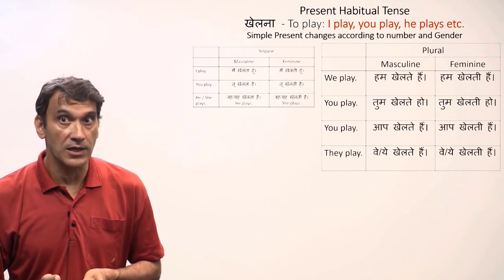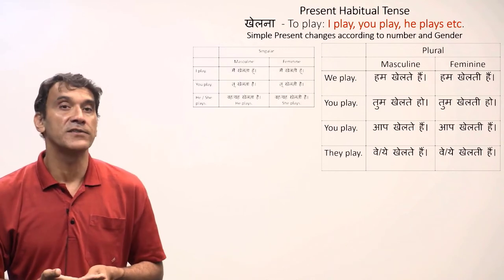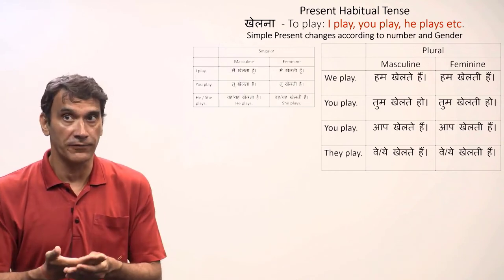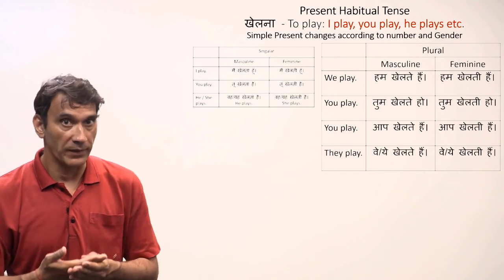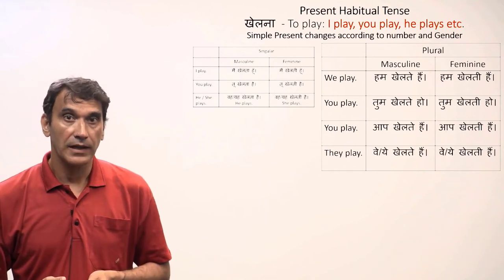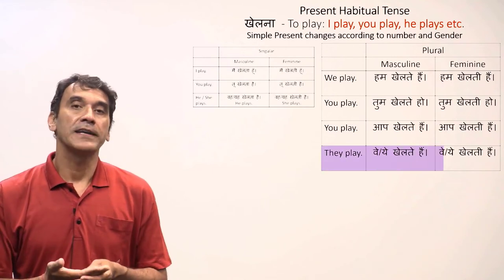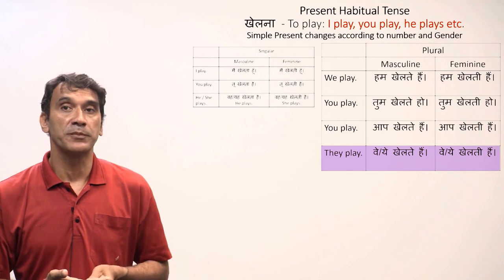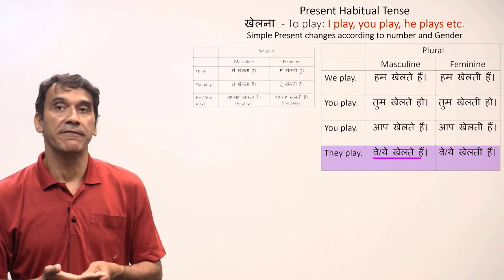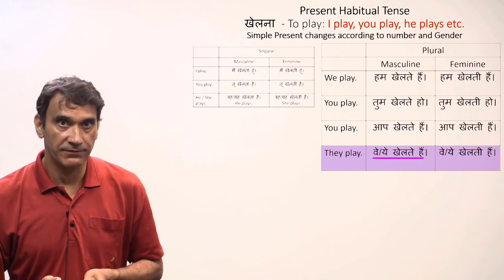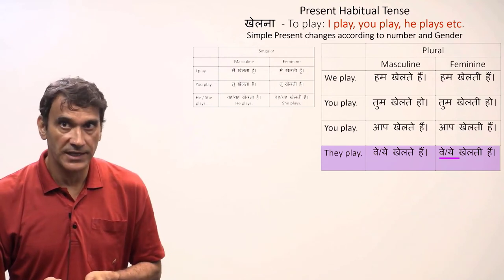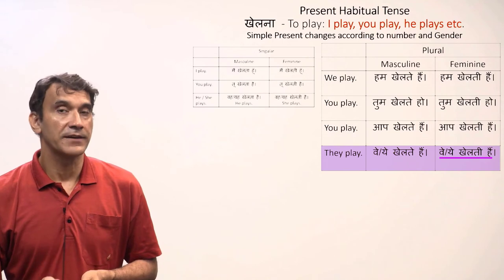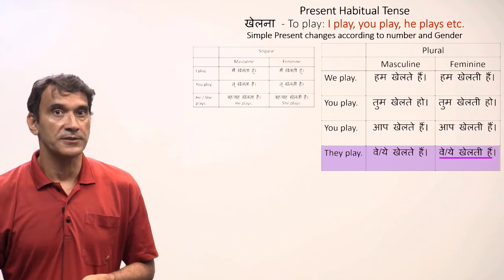Hindi has three forms for second person — 'tu,' 'tum,' and 'aap' — and all three have different forms, but all are translated into English with only one form: you play. For the third person plural, 'they play' in English would be 'yeh/weh khailtay hain' for a masculine subject and 'yeh/weh khailti hain' for a feminine subject.